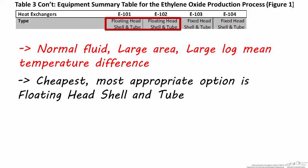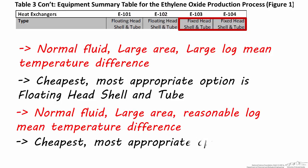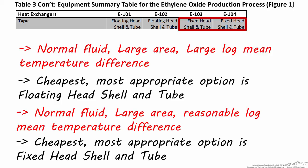This type of heat exchanger is the cheapest and most appropriate considering the area required and the difference in temperature between the inlet and outlet shell-side and tube-side fluids. I chose a fixed head heat exchanger for E103 and E104 because it's the cheapest option for units requiring their heat transfer areas, and also because these streams have a moderate log mean temperature difference, both below 100 degrees centigrade, so we can expect less thermal expansion and contraction. This means we don't need to use a floating head or U-tube heat exchanger.